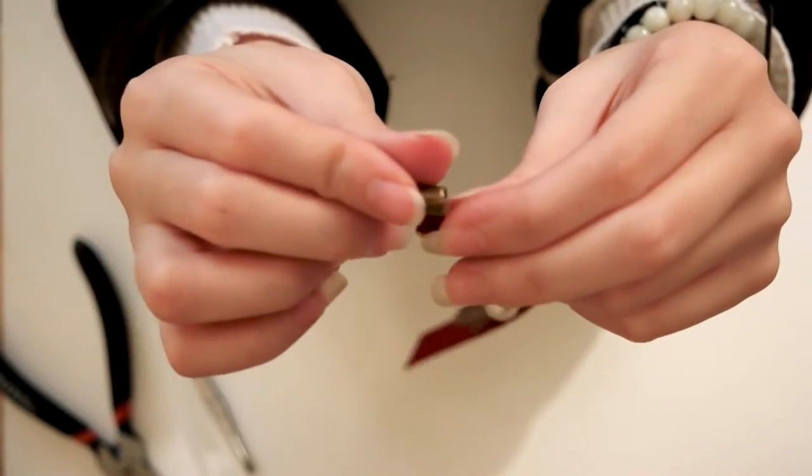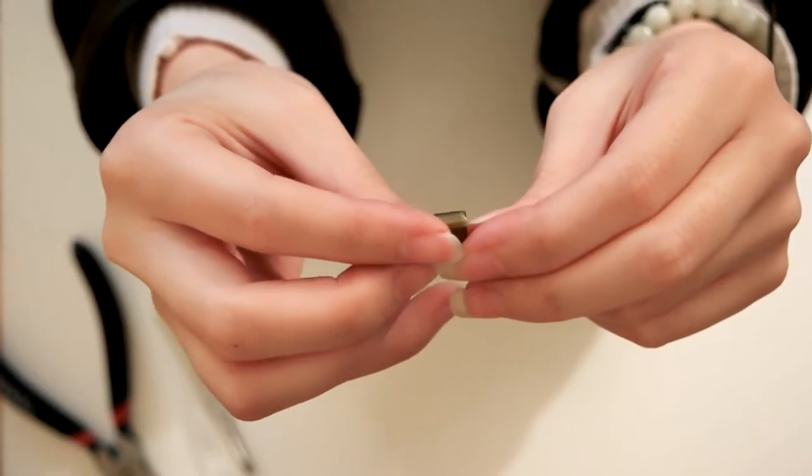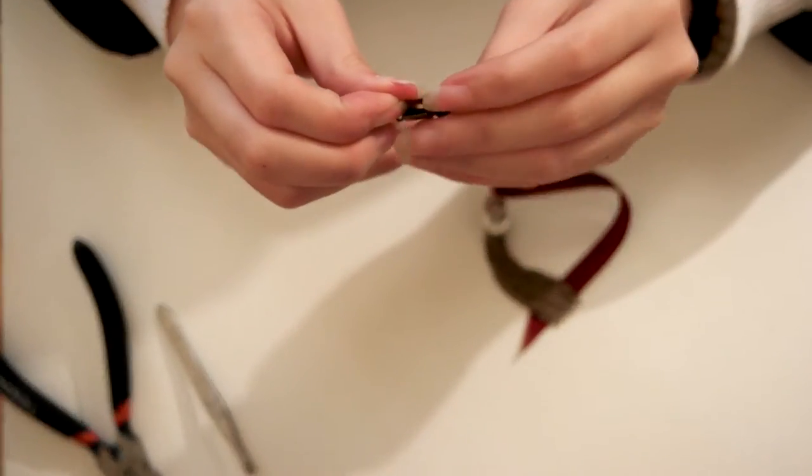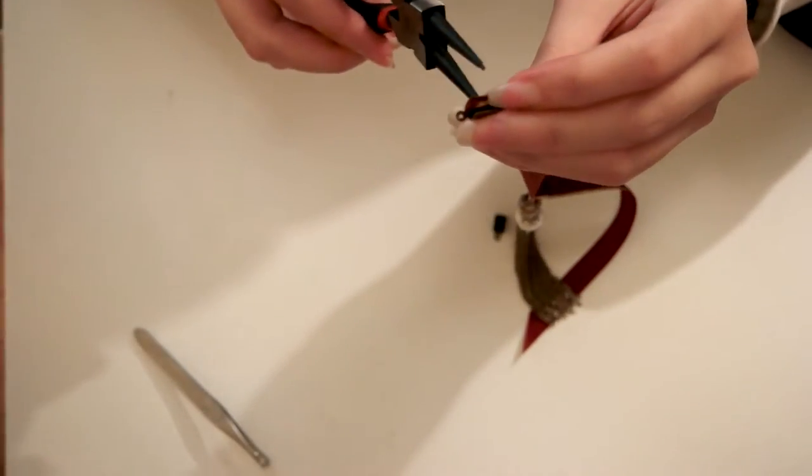Now make sure to have the legs of the clasp and the wrong side of the ribbon facing up, so when the clasps are crimped it'll look clean. Take the pliers, the large plier, not the needle nose, and clamp down on the side one over the other.